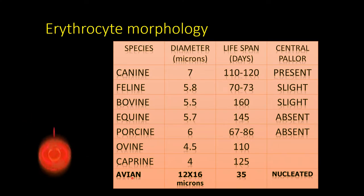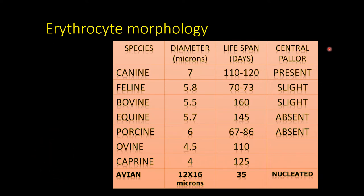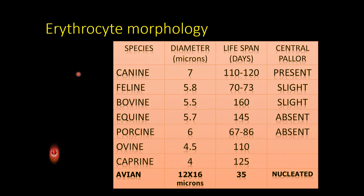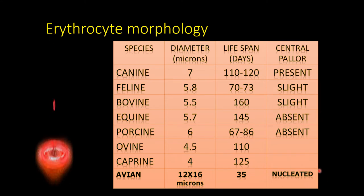This is a tabular presentation of morphological features of RBCs across different animal species. Among domestic species, dogs have the largest RBC diameter and goats the smallest. A special feature is that avians, together with amphibians, have a nucleus present in their RBCs.